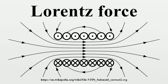Lorentz force in terms of potentials: The E and B fields can be replaced by the magnetic vector potential A and electrostatic potential φ, where ∇ is the gradient, div is the divergence, and × is the curl. The force becomes a certain expression, and using an identity for the triple product it simplifies. Using the chain rule, the total derivative of A is obtained, so the above expression can be rewritten in a form which can take the convenient Euler-Lagrange form.